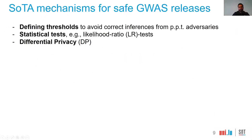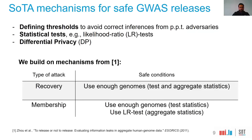In the literature, there are approaches that enforce safe releases of GWAS, which we can categorize into three types. Some are based on defining thresholds to prevent correct inferences by polynomial probabilistic time adversaries. We can also rely on statistical tests such as likelihood-ratio tests to enforce that no individual can be identified as a participant. In addition, we can use differential privacy to protect the outputs of releases by applying noise to ensure that a membership attack cannot be successful.